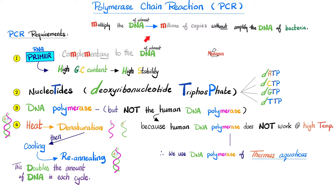PCR time. We multiply the DNA of interest. PCR can give you millions of copies without even amplifying the DNA of the bacteria. Requirements for PCR: we need a primer, we need nucleotides, we need DNA polymerase, and we need heat for denaturation followed by cooling for re-annealing. The primer is a short RNA sequence of about 10 nucleotides, complementary to the DNA of interest, with high GC content — and remember, GC stability. Nucleotides are deoxyribonucleotide triphosphates such as dATP, dCTP, dGTP, dTTP, etc.